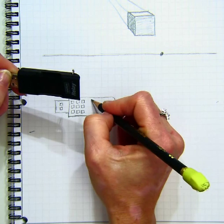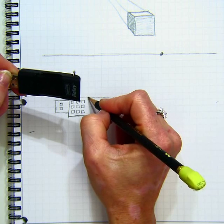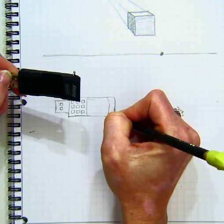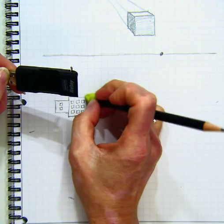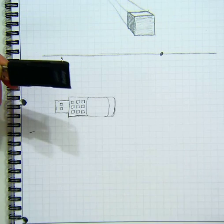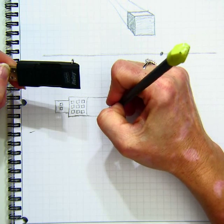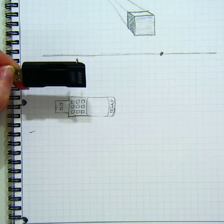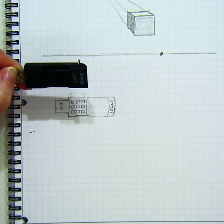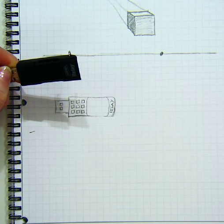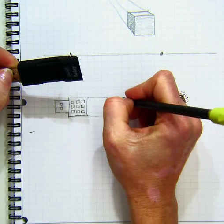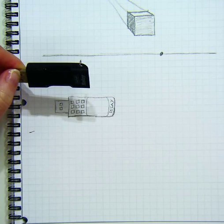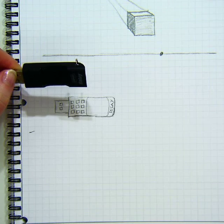And then there is like a little round section that goes in here. So this is my front face of my flash drive.